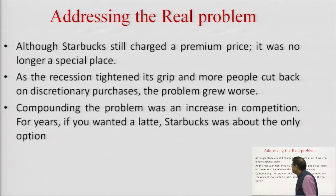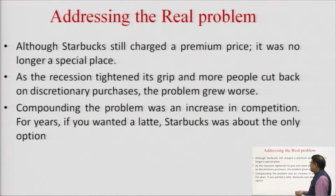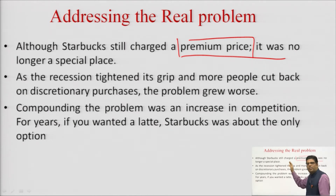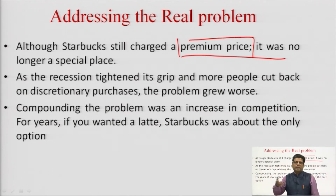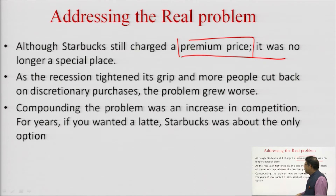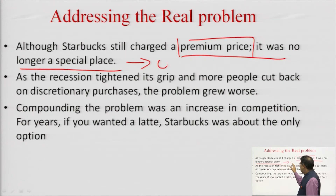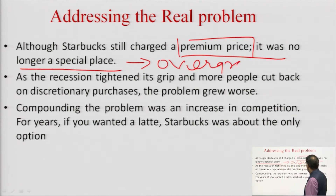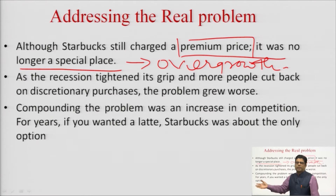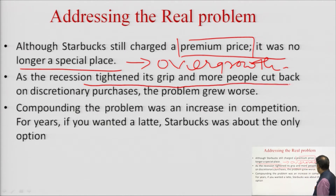Moving ahead to addressing the real problem: although Starbucks still charged a premium price — higher than the market average — it was no longer a special place. This was due to overgrowth; there were so many outlets that people were bored of seeing them everywhere and grew out of it. As the 2008 recession tightened its grip and more people cut back on discretionary purchases, the problem grew worse. People decreased their leisure expenditure, stopped going to Starbucks, and this further brought profits down.